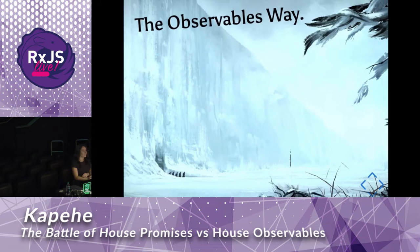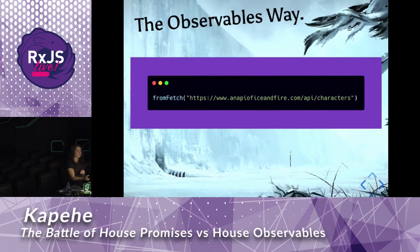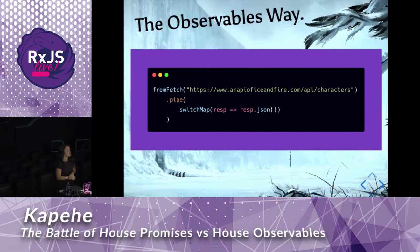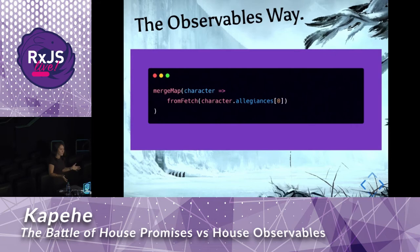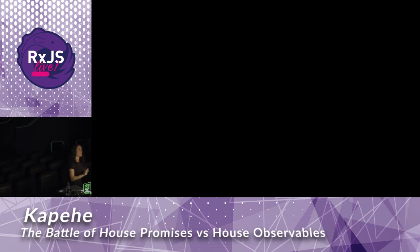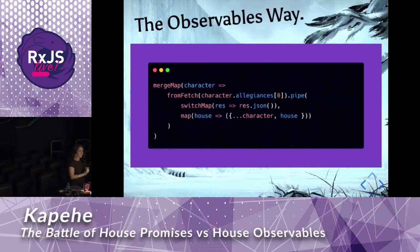Let's look at the observables way. We're going to use fromFetch to get data from the API — same Ice and Fire API. We are going to use switchMap to unwrap the data. Next, we are going to filter out the characters with an allegiance. Since we need to go grab a new set of data from another API call, we are going to use mergeMap to combine those two sets of data. Putting all of this together, we get a more concise function that we can easily add more logic to without having to write much more.